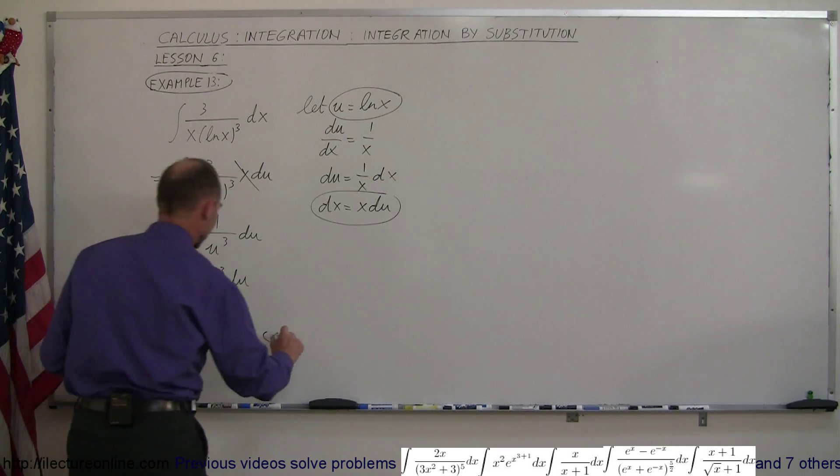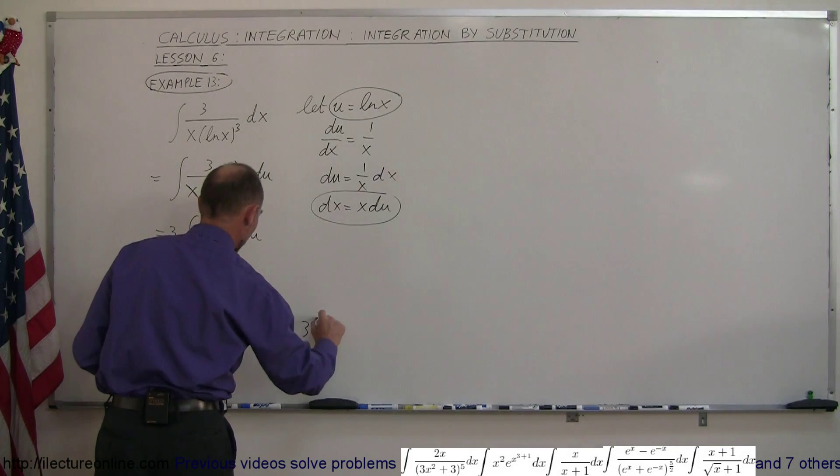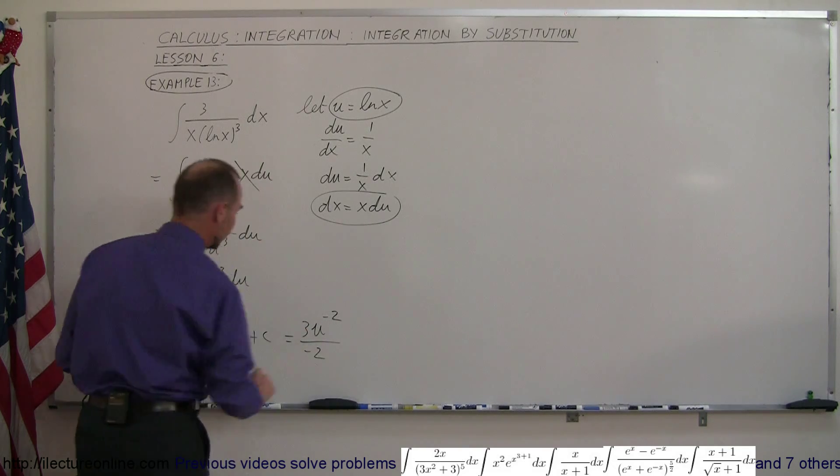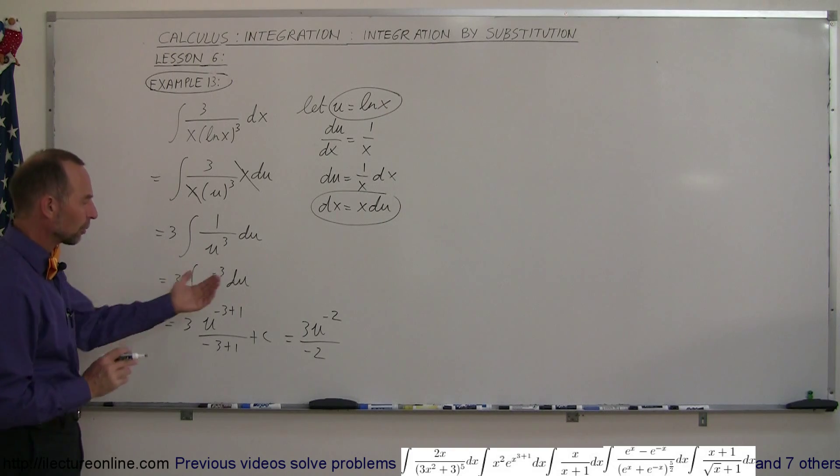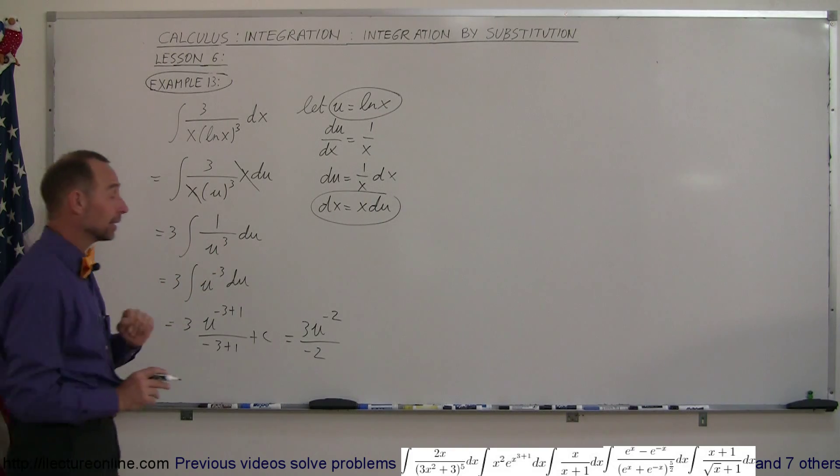So simplifying that, that is equal to 3 times u to the minus 2 over minus 2. Of course, we don't like negative exponents, I'm going to move it, oh, and don't forget, the plus c, got to have a plus c there.